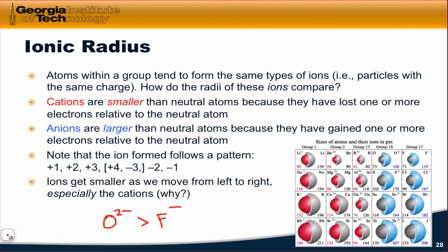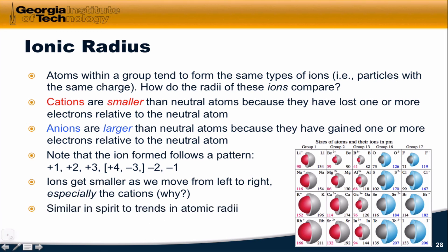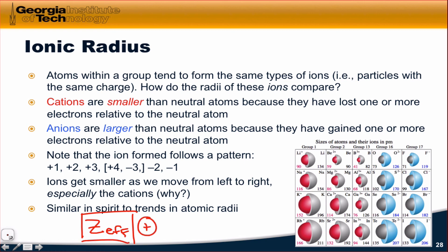It's a similar idea: in F minus, the effective charge of the fluorine nucleus is greater than the effective nuclear charge of the oxygen nucleus in O2 minus. This is similar in spirit to the trend in atomic radii — the essential piece to understand is the effective nuclear charge of the atom, which comes from the nuclear charge itself minus any shielding due to electrons between the electron of interest and the nucleus.